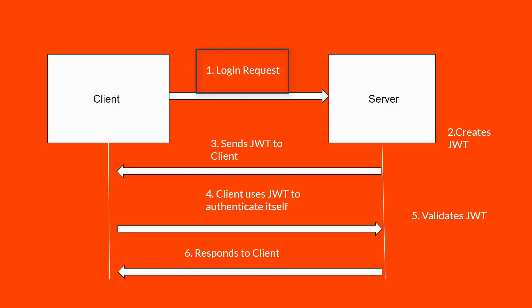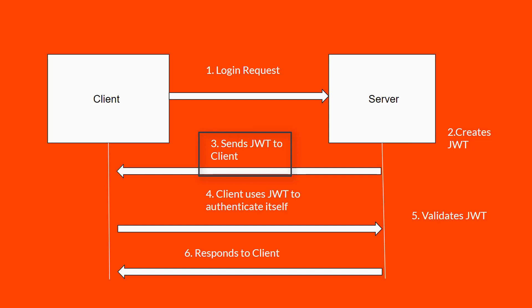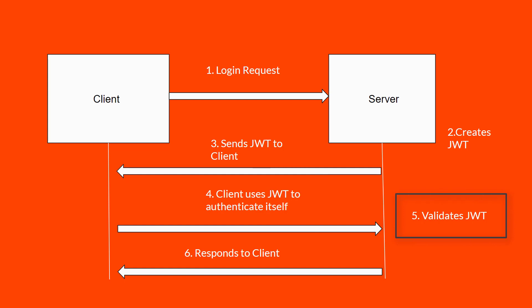First of all, we have a client who wants to login to our server. The client makes a login request by providing credentials. The server receives this information, validates the credentials, and if they match, it creates a JSON Web Token and sends it back to the client. The client then uses this token to authenticate itself for all consecutive requests. The server validates this token and, after successful validation, responds with the required data.